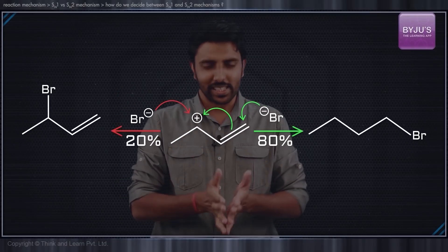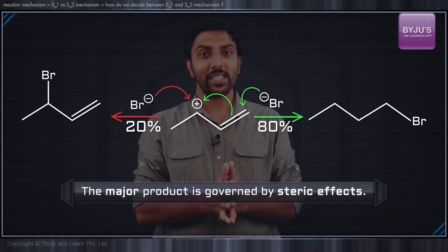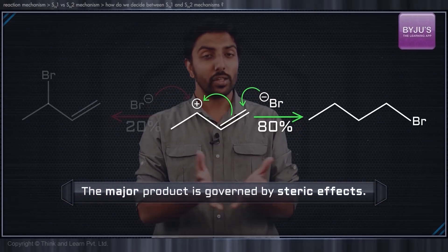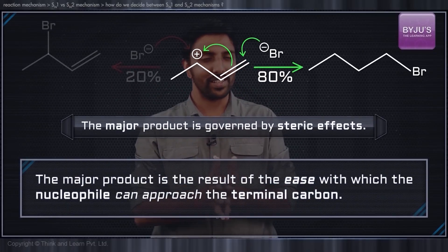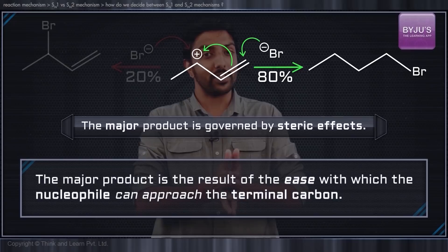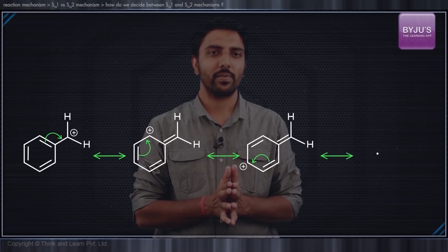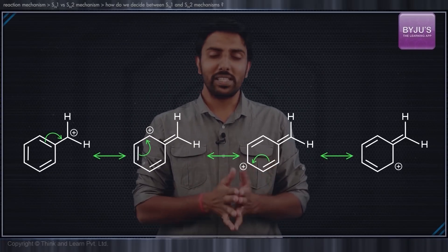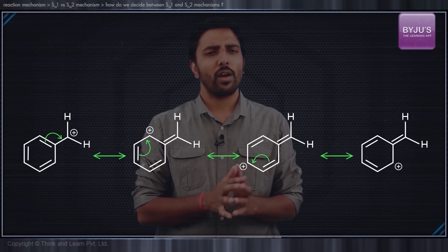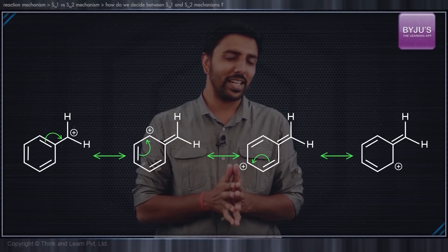Although this mechanism is SN1, the major product is governed by steric effects. In other words, the major product is a result of the ease with which the nucleophile can approach the terminal carbon. Likewise, if we have a benzoyl chloride undergoing an SN1 mechanism, first the stable benzoyl carbocation is formed, followed by the nucleophilic attack only at the benzoyl carbocation.